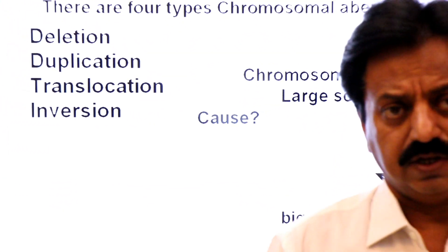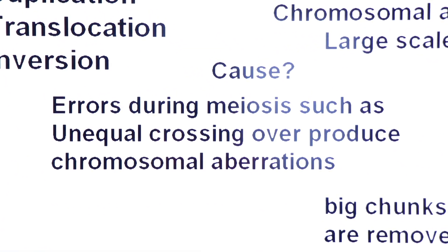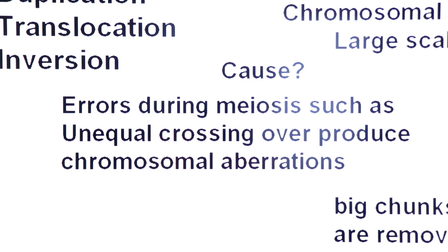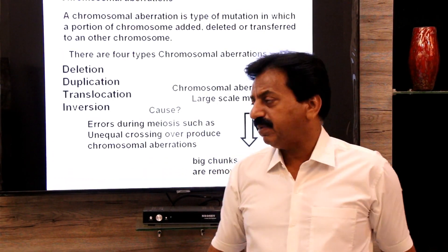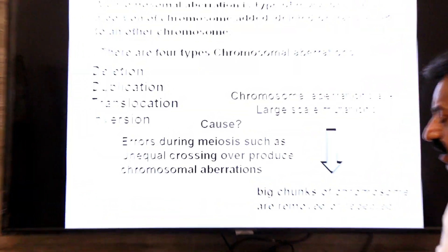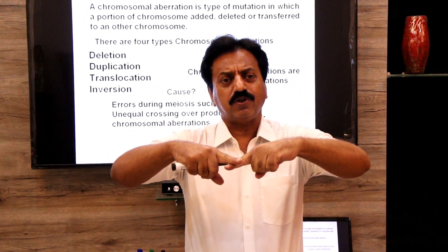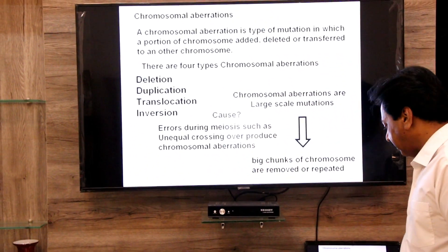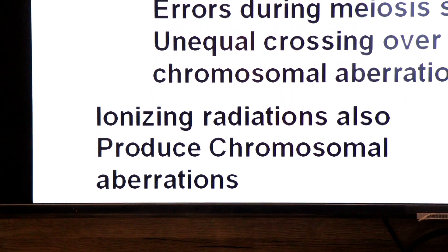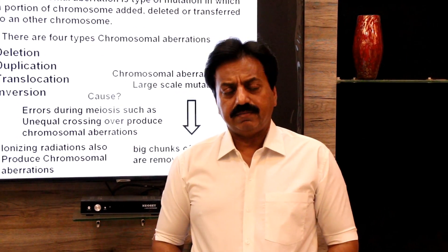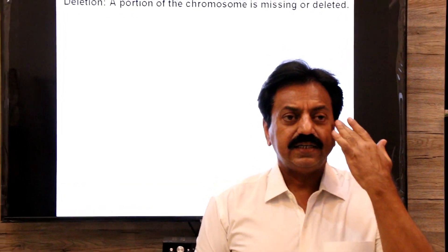What is the cause of chromosomal aberration? The first cause is errors during meiosis, such as unequal crossing over. Mutation is a mistake in the language of DNA, and this mistake can occur during DNA replication. In crossing over, paternal and maternal chromosomes exchange segments on non-sister chromatids, and mistakes can occur here. The second cause is ionizing radiations, which also produce chromosomal aberrations.